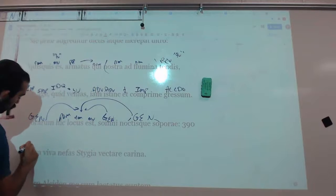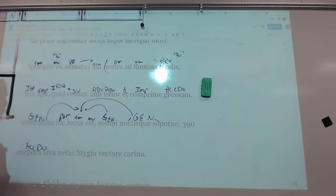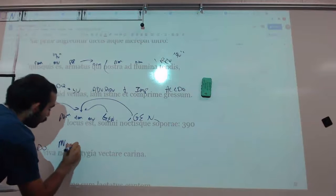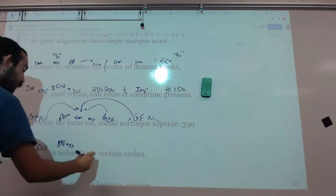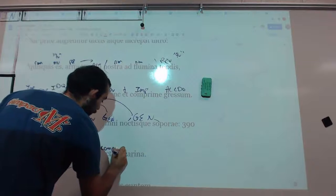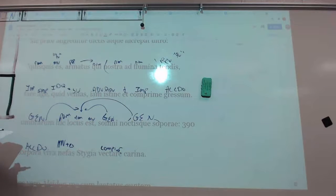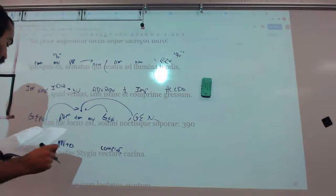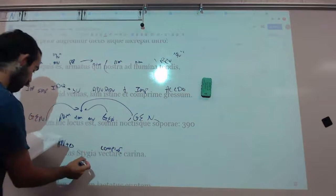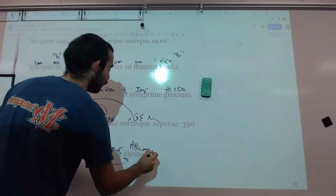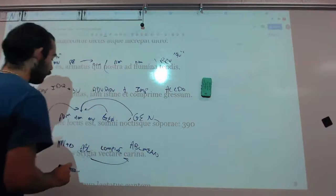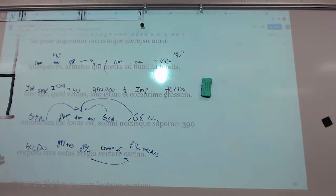And corpora viva, nefas, carina Stygia vectare. Here's our main verb, we have to add the word est. It is not permitted to carry living bodies in this Stygian ship. Or with a Stygian ship. So, in other words, he says, it's not allowed to allow people who are alive to be on a boat of death. Go figure.